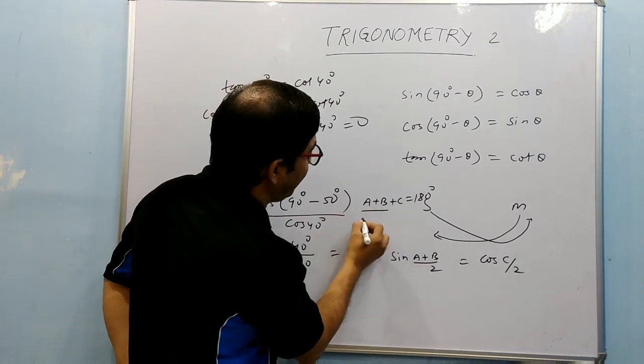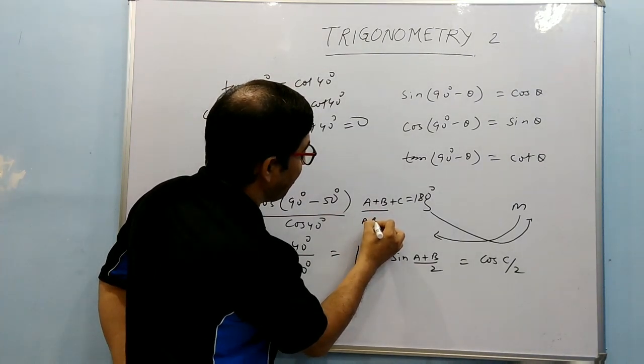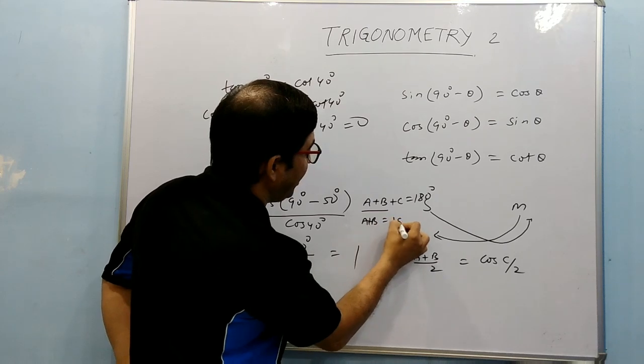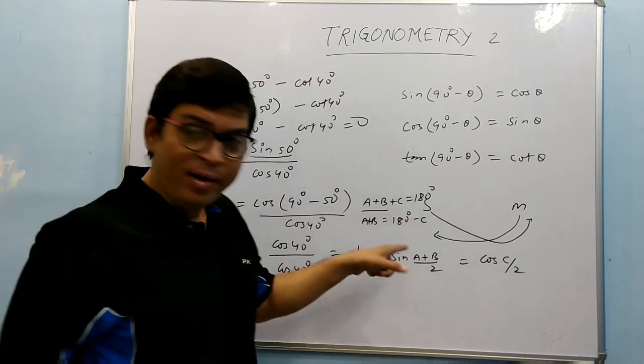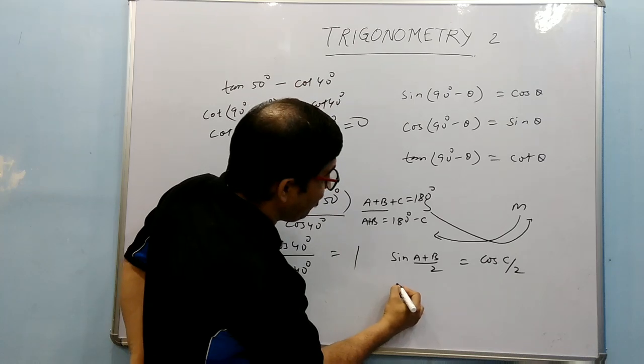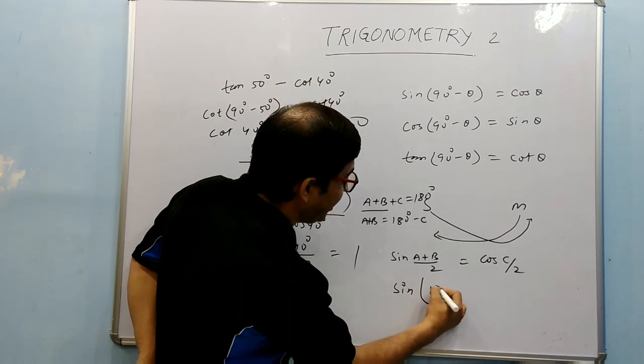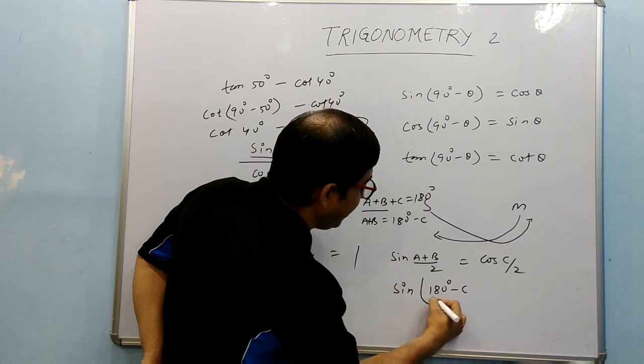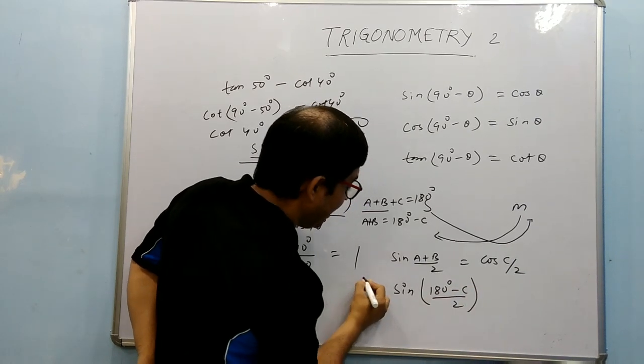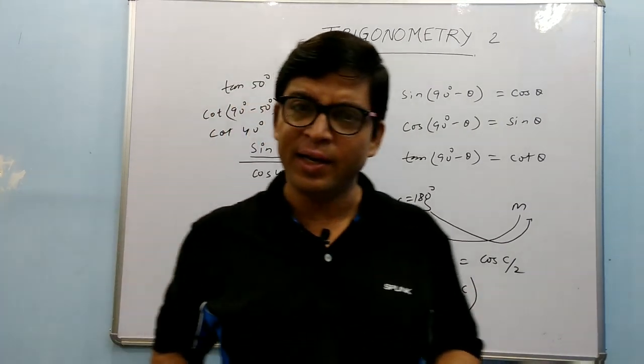A + B can be written as 180° - C. That we will be using here. We will write this as sin[(180° - C)/2]. Now just think, why I am doing this? We have to go for memorizing these things? No. All the time you see what you got and in which direction you have to go.